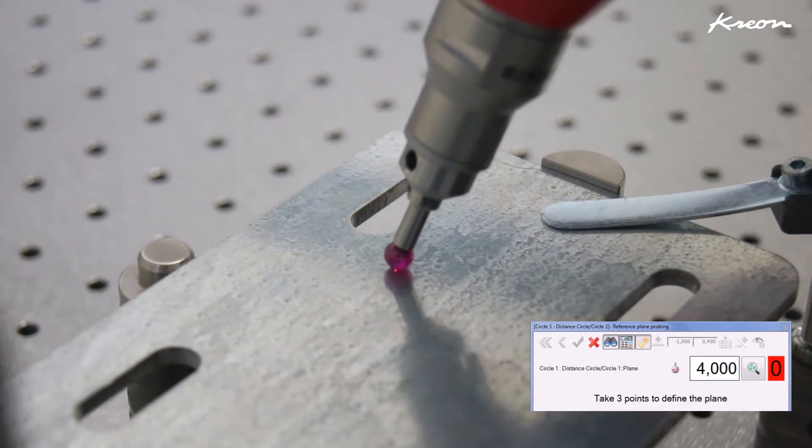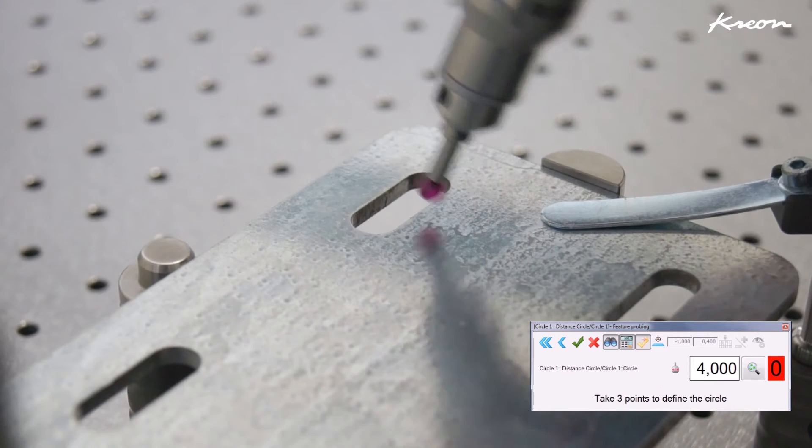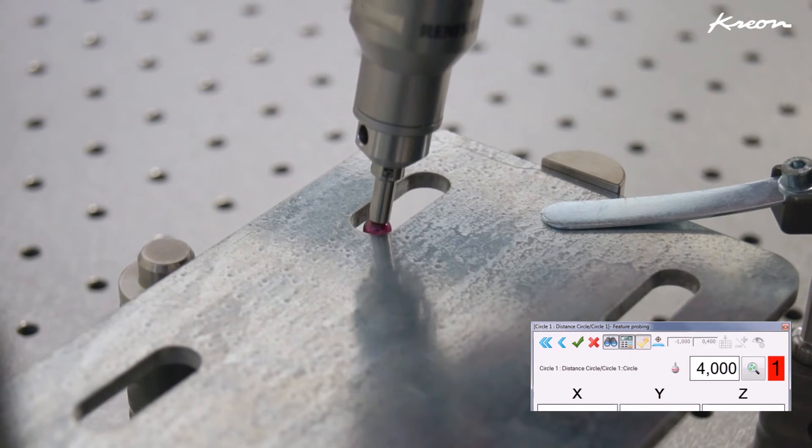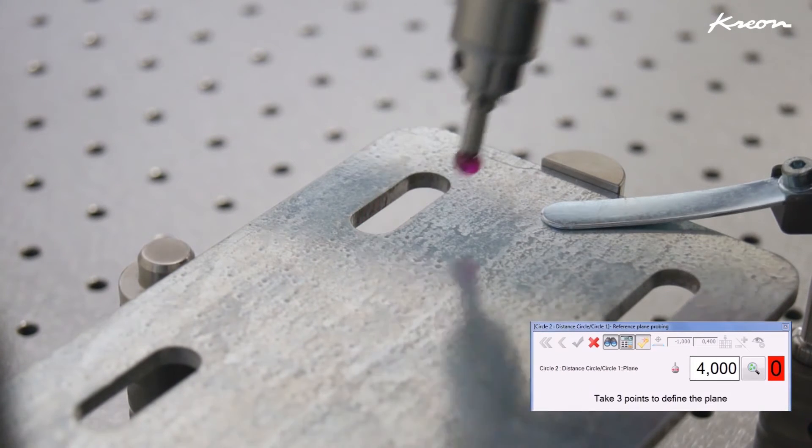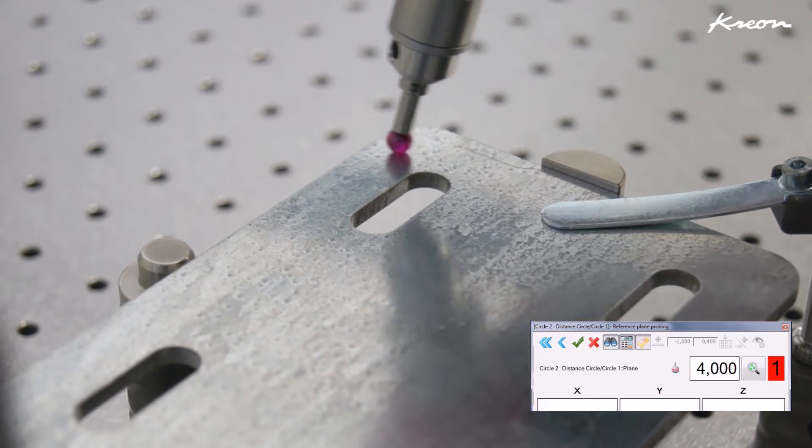Now we will measure the distance between two circles. As the two circles could be on a different projected plane, we first take three points on the corresponding plane and then three points on the circle.